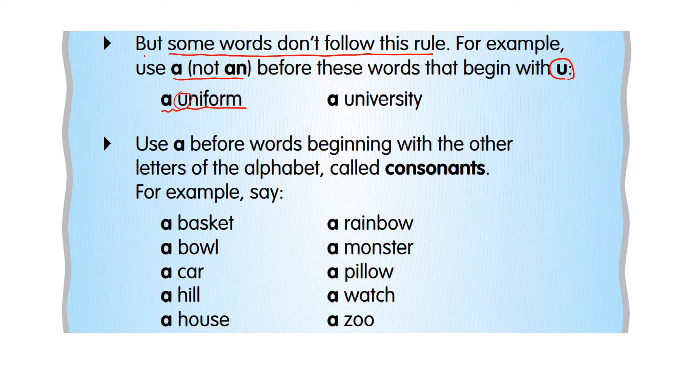When U sounds like Y-O-U, uniform, use a instead of an. Here, if you read this, it sounds like university, correct? So, you don't say an university, but a university.